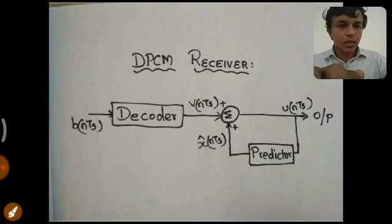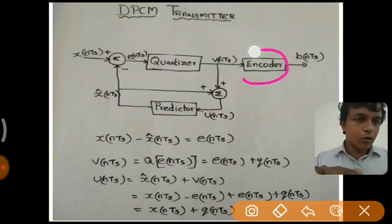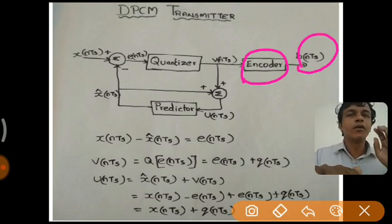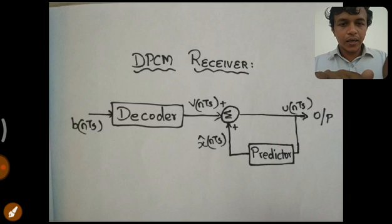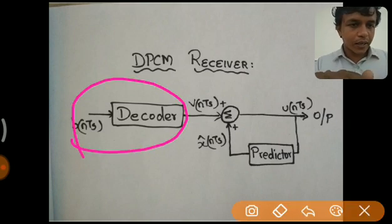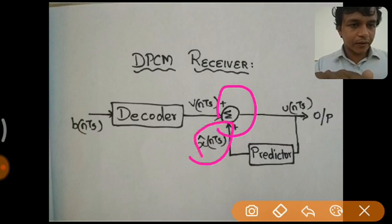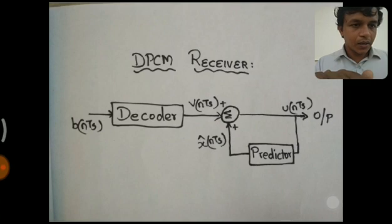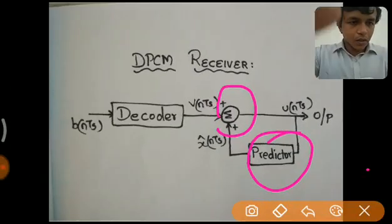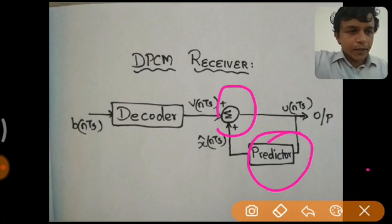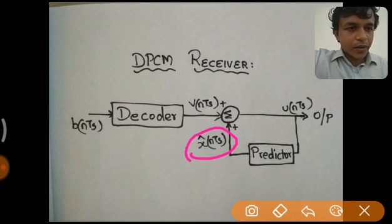Now let us look at the DPCM receiver. The transmitted sequence b(nTs), encoded as zeros and ones, is passed through the channel. At the receiver it is decoded to recover v(nTs). This v(nTs) is added with the predicted value x̂(nTs); a predictor is again employed in a feedback loop on the receiver side. Adding v(nTs) with x̂(nTs) gives u(nTs), which is the output.